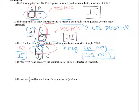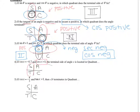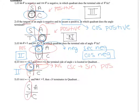Now try examples four and five on your own. For example four: cosine is negative — that means cosine is negative in quadrants two and three. Cosecant is greater than zero, meaning positive; cosecant is the reciprocal of sine, so we look for where sine is positive: quadrants one and two. They overlap in quadrant two. For example five: cosine is negative, so quadrants two and three. Tangent is greater than zero, positive in quadrants one and three. They overlap in quadrant three.